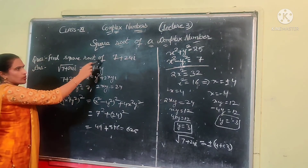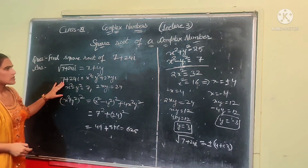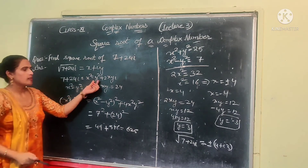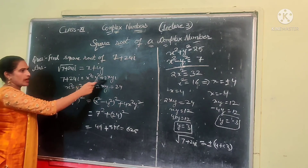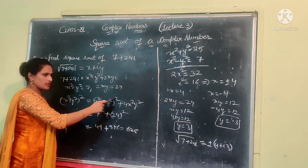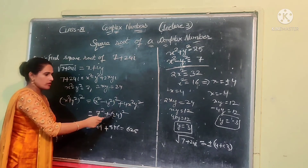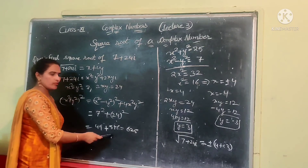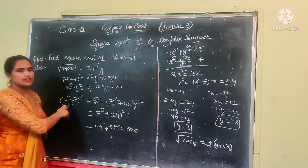Next question: find the square root of 7 plus 24 iota. The first steps in all questions of finding the square root of a complex number are the same. Squaring both sides and expanding using (a plus b) whole square, then equating real and imaginary parts: x squared minus y squared equals 7 and 2xy equals 24. Applying the formula, (x squared plus y squared) squared equals 49 plus 576 equals 625. Therefore, x squared plus y squared equals the square root of 625, which equals 25.